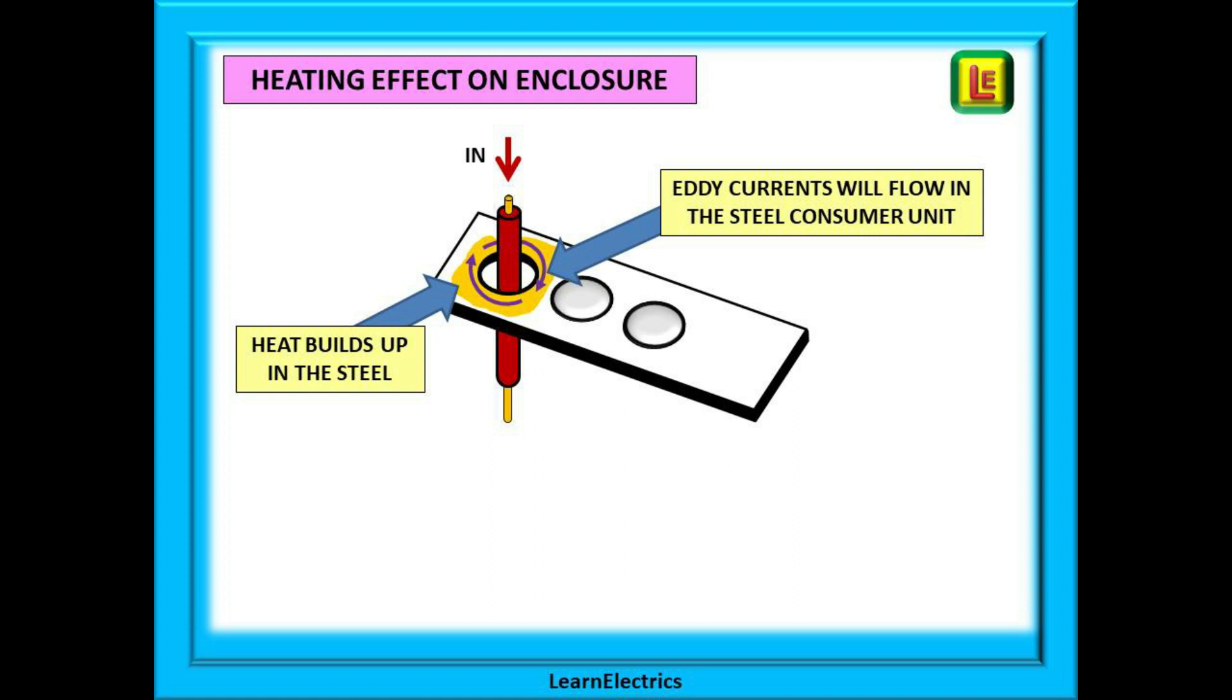This electromagnetic effect will start to generate a heat buildup in the metal of the consumer unit. As we know, heat is one thing that we do not want in electrical circuits. Our cables generally have a limiting temperature of 70 degrees centigrade and are more efficient the cooler that they are.